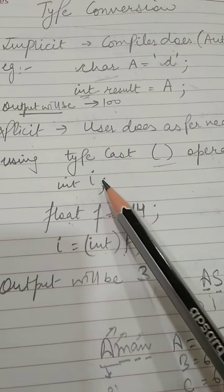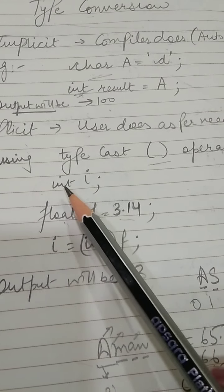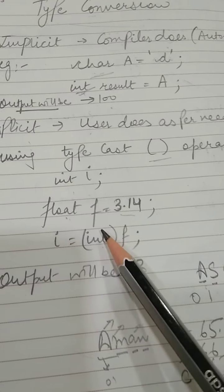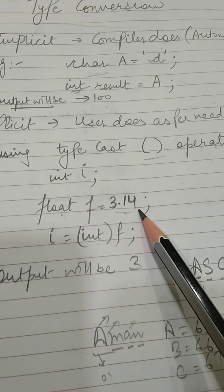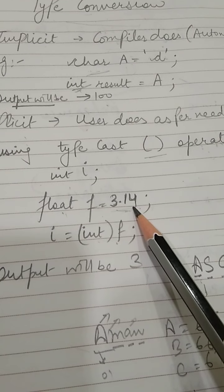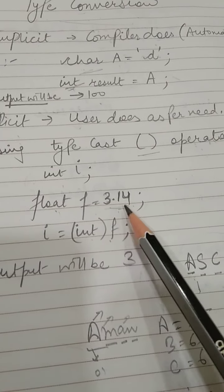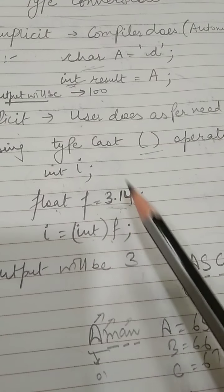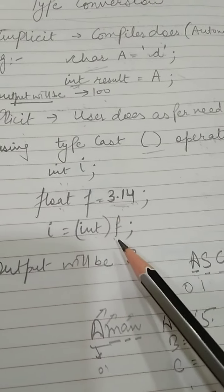Now I am explaining it again. I have taken variable i as int type. In f I have taken 3.14, that is the decimal value. In any case, I want to convert 3.14 into integer type.